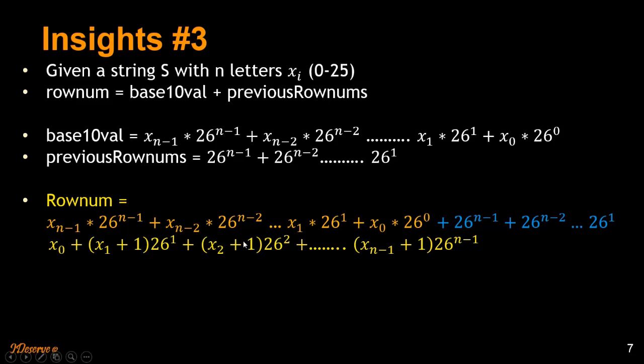So if you have this base 10 value and the previous row number, I have put them together here. Base 10 value plus the previous row numbers. And when you take few things common and do some math magic here, you will get this.